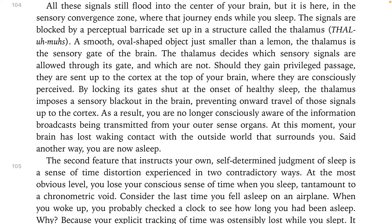Thalamus — a smooth, oval-shaped object, just smaller than a lemon. The thalamus is the sensory gate of the brain. It decides which sensory signals are allowed through its gates and which are not. Should they gain privileged passage, they are sent up to the cortex at the top of your brain, where they are consciously perceived. By locking its gates shut at the onset of healthy sleep, the thalamus imposes a sensory blackout in the brain, preventing onward travel of those signals up to the cortex. As a result, you are no longer consciously aware of the information being transmitted from your outer sense organs. At this moment, your brain has lost waking contact with the outside world that surrounds you.